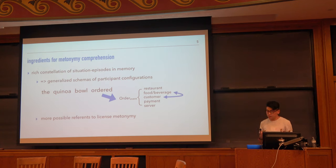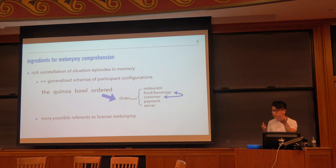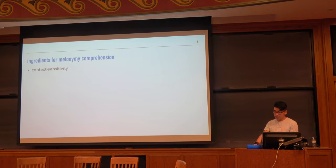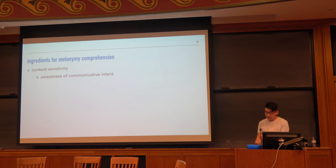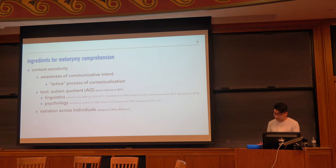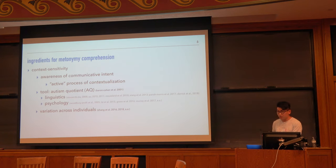A rich bank of situation episodes and schemas in memory will give you more possible reference to pick and choose from to license that external participant in the metonymy relation. But just having a wealth of experiences isn't going to be enough. We also want to say that you have to be able to use this rich constellation of schemas — we're going to call this context sensitivity broadly. Being context sensitive means that you're aware of communicative intent, and thus you're going to be actively using contextual information to resolve ambiguities like metonymy. One tool that's been used is the Autism Quotient Questionnaire, used by linguists and psychologists as a way to measure the degree of context sensitivity in individuals.